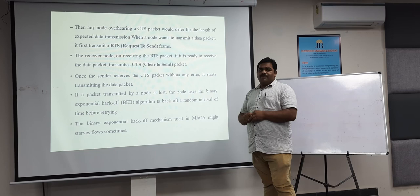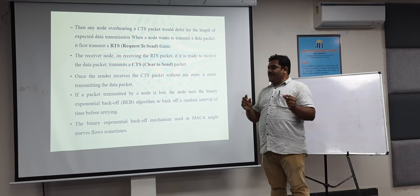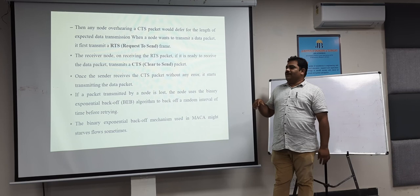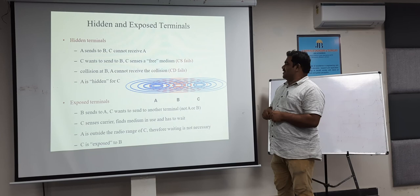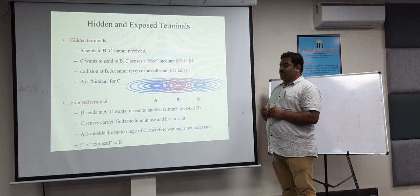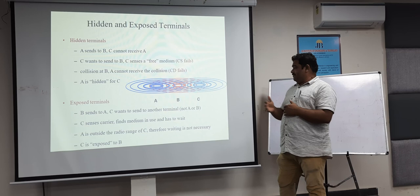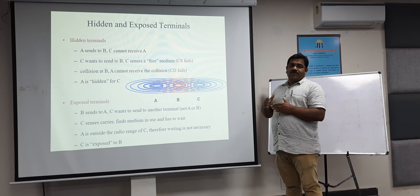If you take the hidden terminal problem: A will send an RTS packet to B, then B will send a CTS packet to A as well as to C. Whenever A wants to send data to B, A will send the RTS packet to B, then B will send a Clear to Send packet to A, so a channel will be established and the data can be transmitted to B. Now if C wants to transmit data to A, since C has not sent any RTS packet, that data transmission cannot happen. This is the way the hidden terminal problem can be resolved.